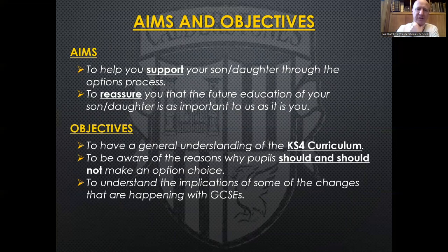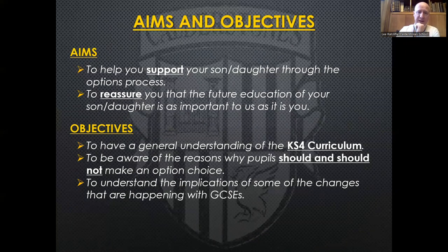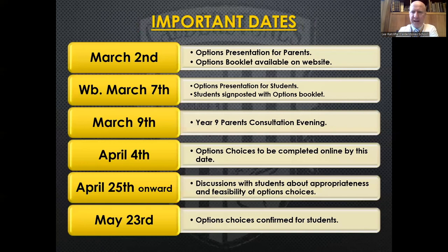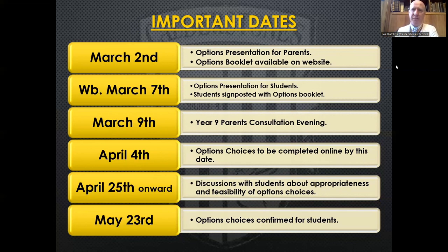Hopefully this presentation has done some of the things we set out to do at the beginning. You should feel a bit better equipped to start the conversation with your son or daughter about GCSE options as we approach next year. It is a smooth process, and the absence of the pathway system this year should make it that little bit smoother. The key date is April 4th — making sure all options choices are completed by that point. It isn't first-come-first-served; it makes no difference when they hand it in as long as it's completed by April 4th. Thank you very much for your time.